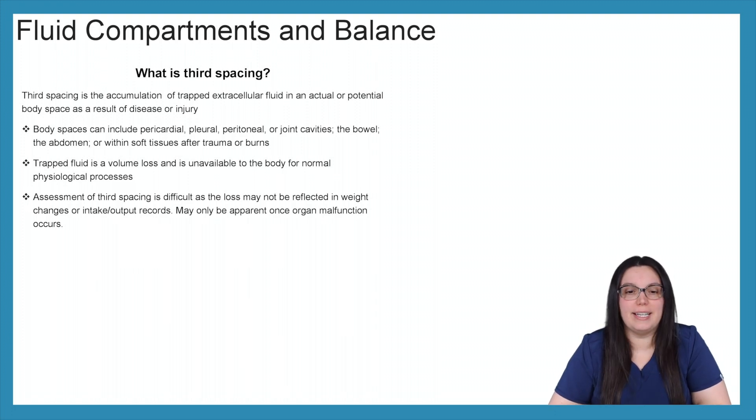So third spacing is the accumulation of trapped extracellular fluid in an actual or potential body space as a result of disease or injury. So we have many different body spaces. This can include pericardial that's around our heart, pleural that's around our lungs, peritoneal that's inside the walls of our abdomen and our pelvis, or even our joint cavities. We have the bowels, the abdomen, or even within soft tissues after trauma or burns.